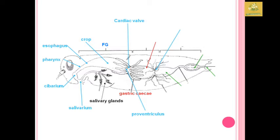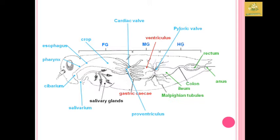The proventriculus and cardiac valve are the final components of the foregut. In the midgut, the components include the gastric caeca and ventriculus, with the pyloric valve being the final organ of the midgut. In the hindgut, the components are the Malpighian tubules, ileum, colon, rectum, and anus.